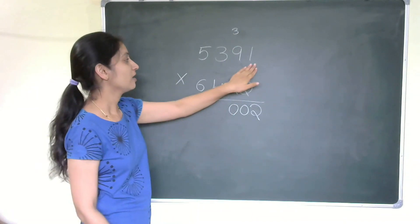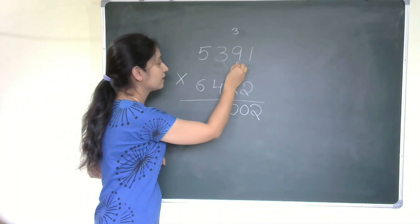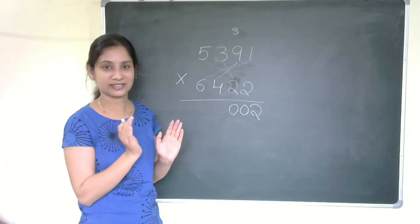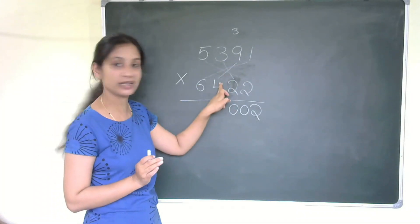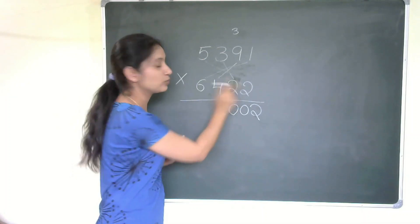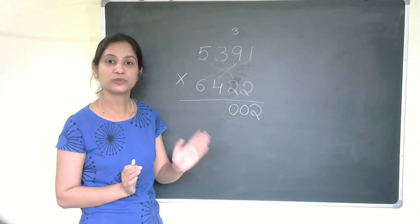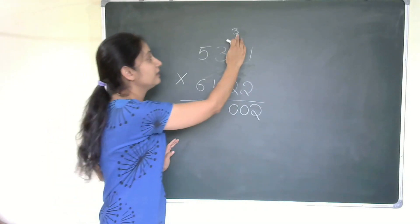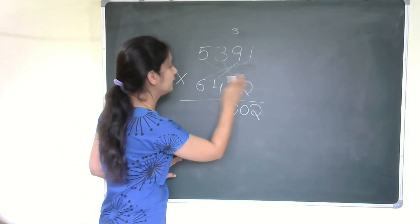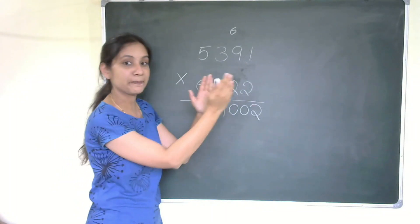Step four — consider the middle values: three twos are six, plus nine fours are thirty-six — thirty-six plus six is forty-two. Plus five twos are ten — forty-two plus ten is fifty-two. Plus six ones are six — fifty-two plus six is fifty-eight. Plus carry-over three — fifty-eight plus three is sixty-one. Write one, carry over six.